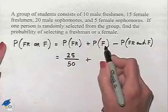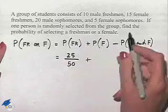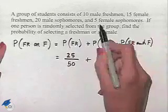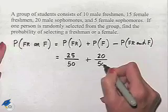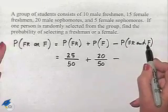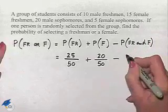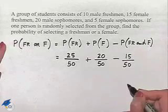How many are going to end up being female? We're going to have 15 female freshmen and five female sophomores, so that's going to be 20 out of the 50. And now we need to subtract off those that are both freshmen and female. And we have 15 female freshmen that fit that, so we're going to have a subtraction of 15 out of 50.